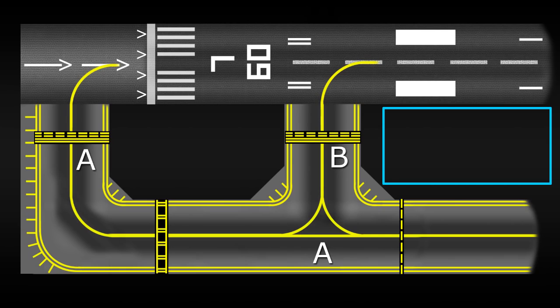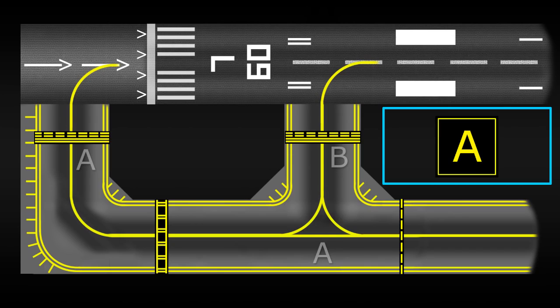So, the first sign I'm going to talk about is the taxiway location sign, and this shows you which taxiway you're currently on. It will always be a yellow letter on a black background.